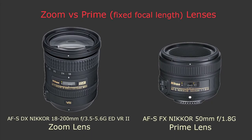First of all let's talk about focal lengths of the lens. Focal length is measured in millimeters, so on every lens you will see the focal length in millimeters, and there are two types of lenses. Some lenses are zoom lenses and some of them are prime lenses. For example the lens on the left is a zoom lens — as you can see it says 18 to 200 millimeters, meaning you can change its focal length from 18mm to 200mm. Unlike the lens on the right which is a prime lens — a lens with fixed focal length — it says 50 millimeters so you can't change its focal length.